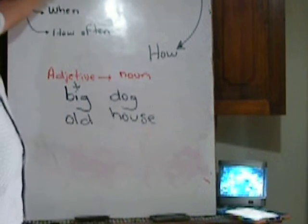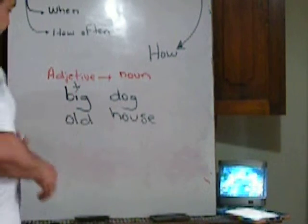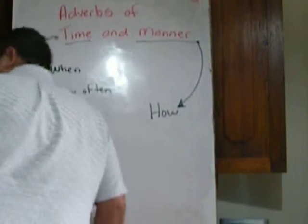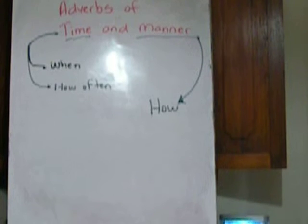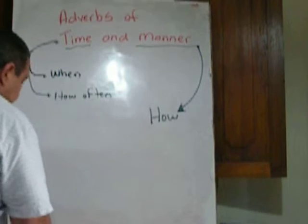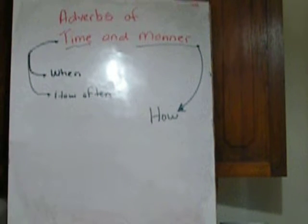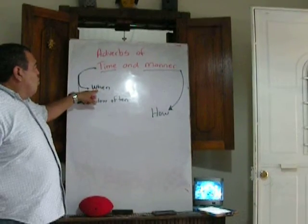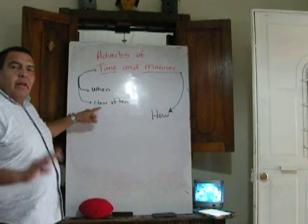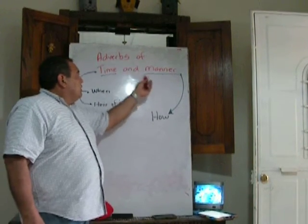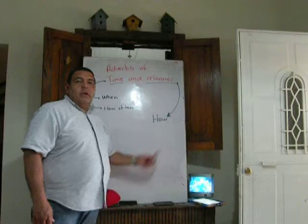In this case, we're going to work with adverbs. Adverbs of time answer us when and how often things happen. Adverbs of manner tell us how things happen.